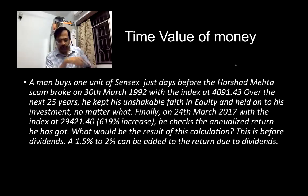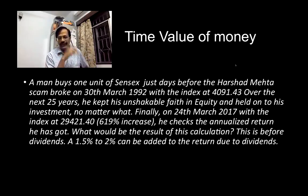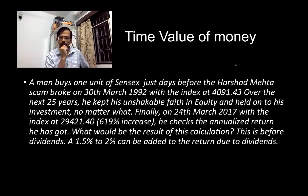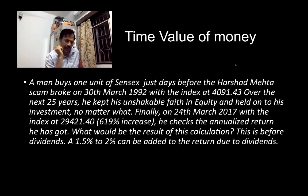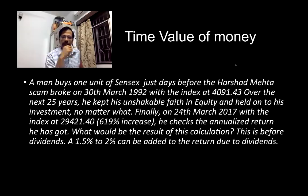Let us get to the example from the opening slide. Say a man buys one unit of the Sensex — assuming that is possible — just before the Harshad Mehta scam broke, on 30th March 1992, when the Sensex was about 4,000. He decides he is going to stay invested no matter what for the next 25 years — it is long term, he expects a lot of money. He held on, and on 24th March 2017 the index was about 29,400, and he checked his returns.